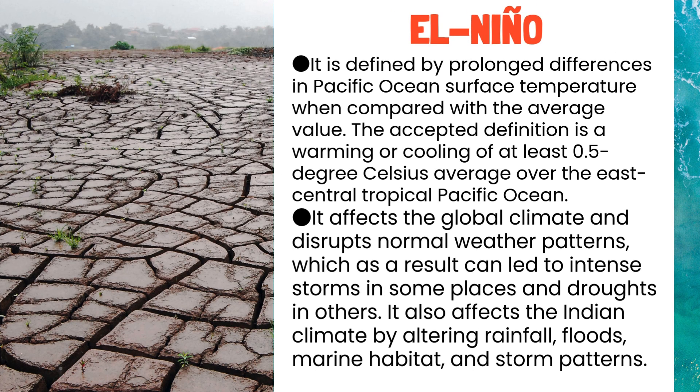El Niño is defined by prolonged differences in Pacific Ocean surface temperature when compared with the average value. The accepted definition is a warming or cooling of at least 0.5 degrees Celsius averaged over the east-central tropical Pacific Ocean. It affects the global climate and disrupts normal weather patterns, which can lead to intense storms in some places and droughts in others. It also affects the Indian climate by altering rainfall, floods, marine habitat, and storm patterns.